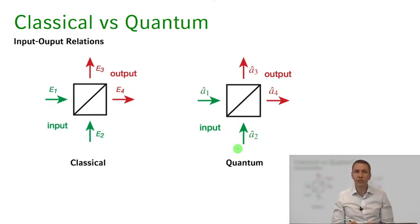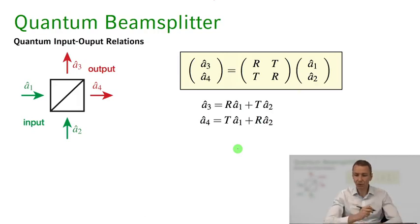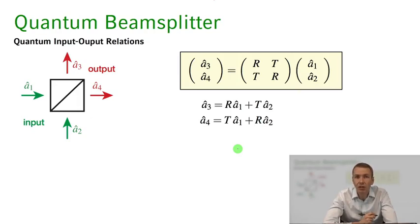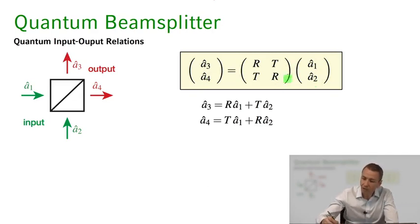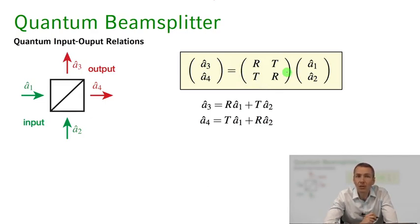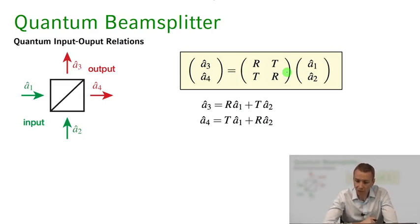So this is the quantum transformation — the quantum input-output relation that extends the classical description to the quantum case. We can rewrite the input-output relation by replacing the fields with destruction operators. The output destruction operators are related to the input destruction operators through our transformation matrix, for which we determined the complex coefficients t and r in the last class. Energy conservation holds all the same, so all the derivations for these coefficients hold in exactly the same way, but now we have a relation between operators and not between fields.